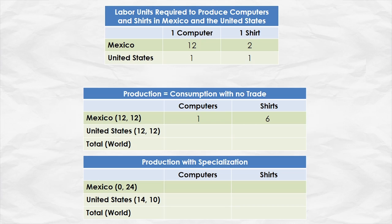In the United States, it's even easier, because it just takes one unit of labor to get one computer and one unit of labor to get one shirt. Therefore, if you devote 12 units of labor to computers you get 12 computers, and 12 units of labor to shirts gives you 12 shirts. So total world production is 13 computers and 18 shirts.